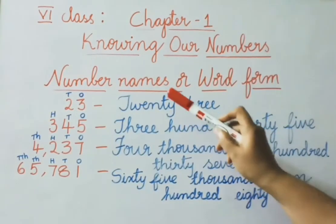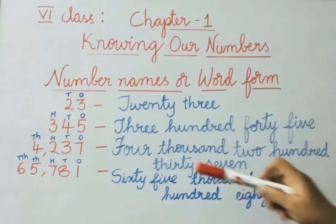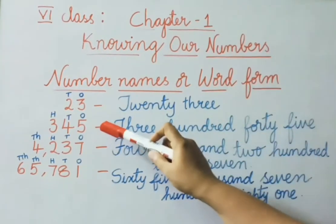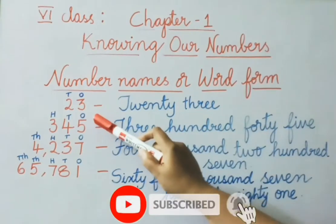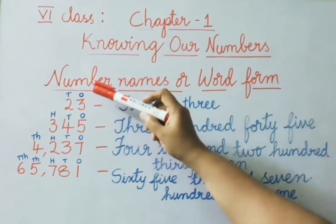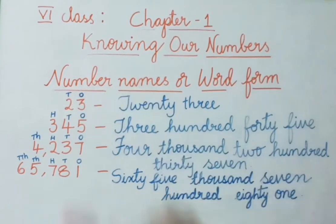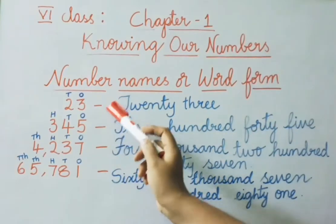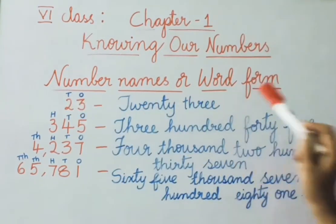See now how to write number names or word form. See the first example: 23. Above the number 23, we have written the places — 1s denoted with O, and the 10s digit denoted with D. We all know this 2-digit number — 2 and 3 means 23. We must write the spelling.